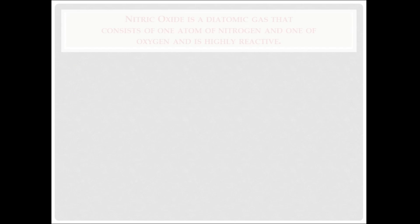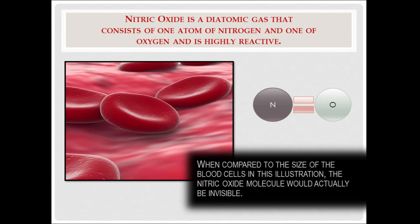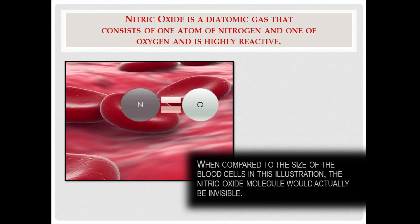As mentioned, nitric oxide is a diatomic gas. Here we have the nitrogen atom and the oxygen atom. Oxygen is highly reactive, while nitrogen is fairly inert. Combined, they form a highly reactive diatomic gas called nitric oxide. The size of the nitric oxide molecule in this illustration is also misleading. If the red blood cells, which are about 6 microns in diameter, were representative, the nitric oxide molecule would actually be invisible. The molecule is that small.